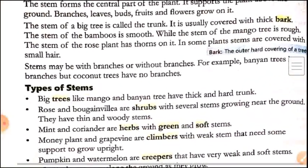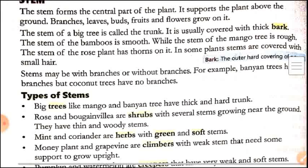The stem of a big tree is called the trunk. It is usually covered with thick bark. The stem of the bamboo is smooth while the stem of the mango tree is rough.